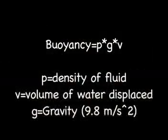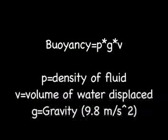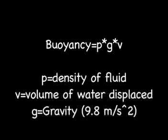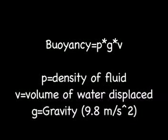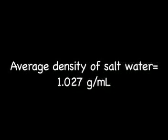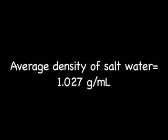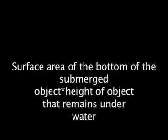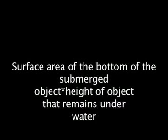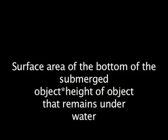The buoyancy of an object is equal to the density of the fluid times the gravity times the volume of the water displaced. The average density of salt water is 1.027 grams per milliliter. To find the volume of the water displaced, the surface area of the bottom of the submerged object must be calculated and multiplied by the height of the object that remains underwater.